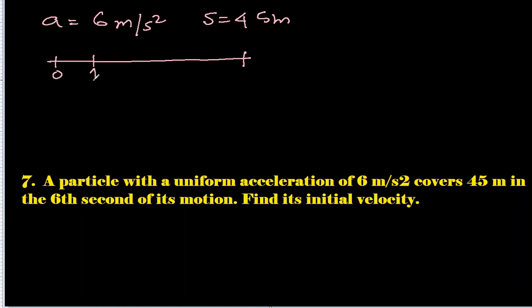So let's try to show this with a number line. Zero to one is first second, then two second, third second, fourth second, fifth second, and this is sixth second, between fifth and sixth.